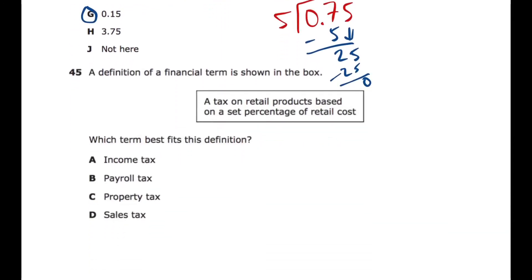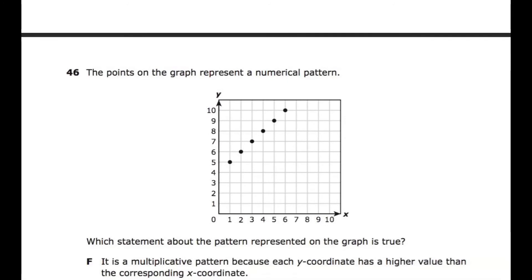Question 45: A financial term is defined as 'a tax on retail products based on a set percentage of retail cost.' The key word is 'retail,' meaning when you buy something at a store. Income tax is money taxed on earnings from work. Payroll taxes come out of a paycheck before you receive it. Property tax is on houses or land. Sales tax is a tax when you buy something at a store — that's the best answer.